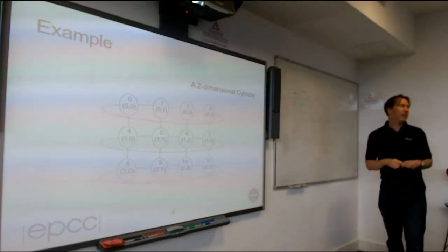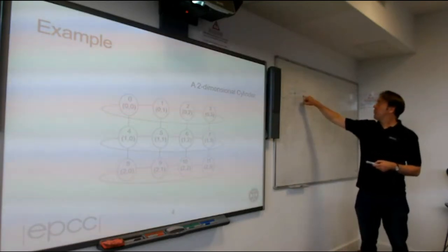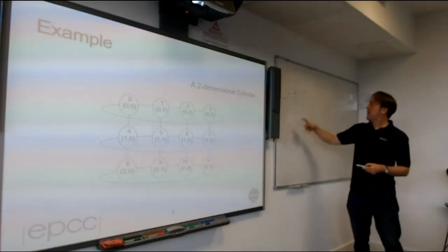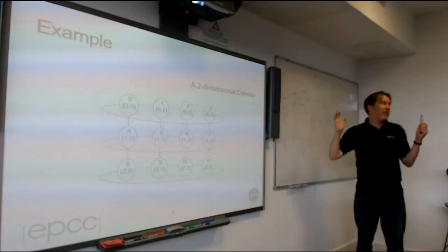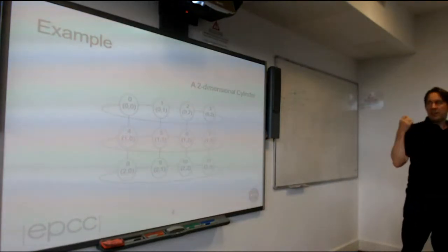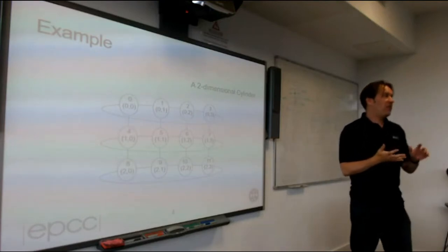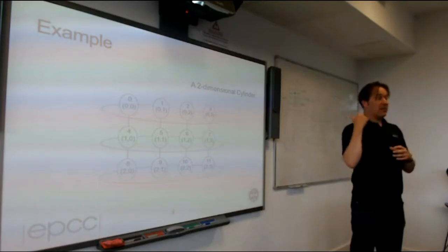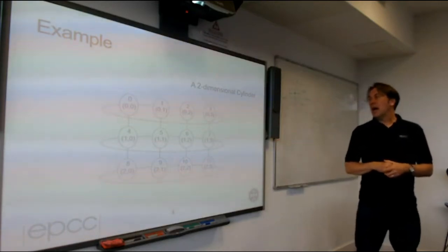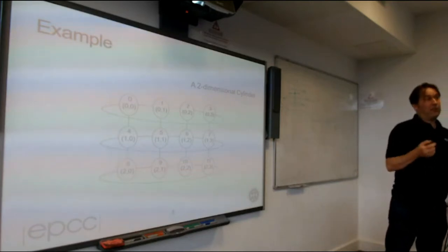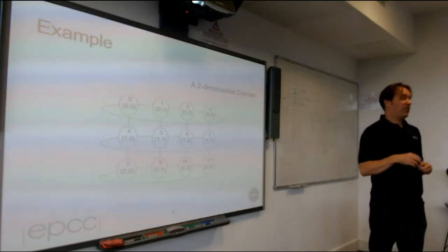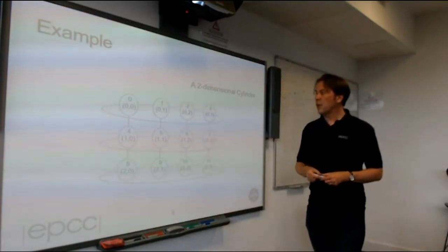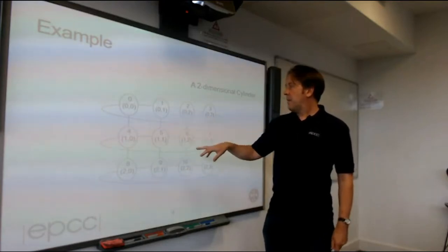In a simulation with fluid flowing left to right, you might want to simulate an infinite pipe using periodic boundary conditions — fluid going off the right comes back in on the left, like the message around the ring. So the neighbour of the rightmost process is the leftmost process. But in the other direction you have hard boundaries. This is called a Cartesian topology, and it has two features: a set of dimensions, and information about what happens at the edges.